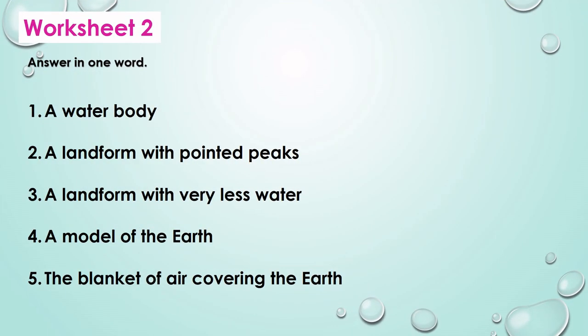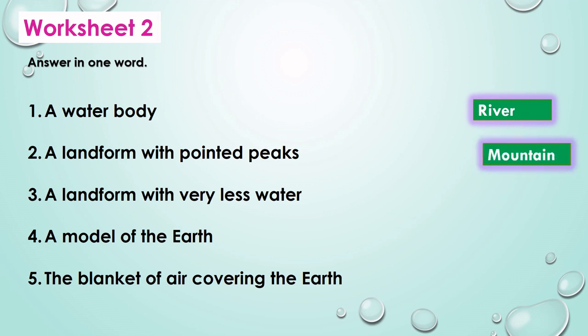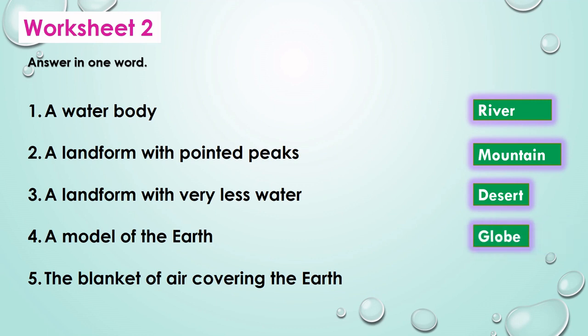Moving to worksheet 2. Answer in one word. The first one is a water body. The answer is river. The second one: a landform with pointed peaks. The answer is mountain. Moving to the third one: a landform with very less water. The answer is desert. Moving to the fourth one: a model of the earth. The answer is globe. The fifth one: the blanket of air covering the earth. The answer is atmosphere.